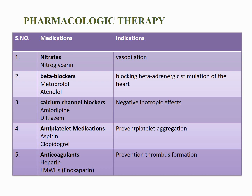Calcium channel blockers such as amlodipine and diltiazem decrease SA node automaticity and AV node conduction, resulting in a slower heart rate and decreased myocardial contraction. They increase myocardial oxygen supply by dilating the smooth muscle wall of coronary arteries and decrease myocardial oxygen demand. Antiplatelet medications such as aspirin and clopidogrel are administered to prevent platelet aggregation and thrombosis. Aspirin prevents platelet aggregation and reduces the incidence of MI and death in patients with CAD. Clopidogrel is given in addition to aspirin in patients at high risk of MI.